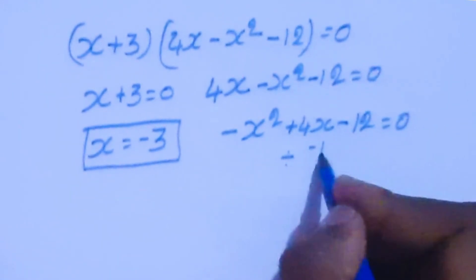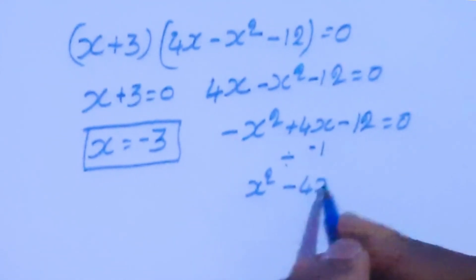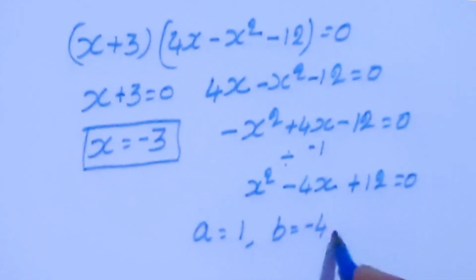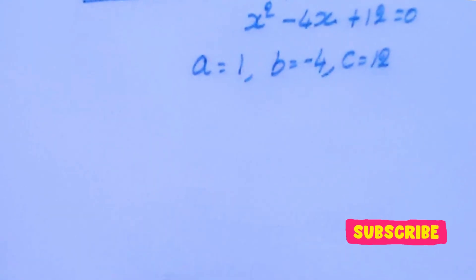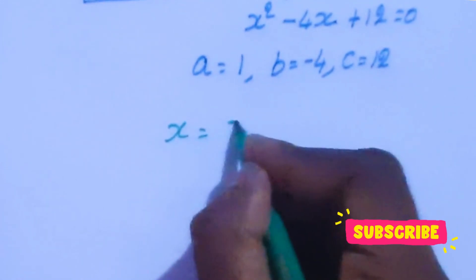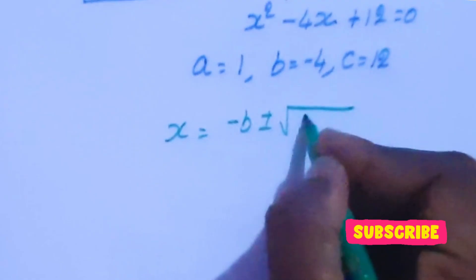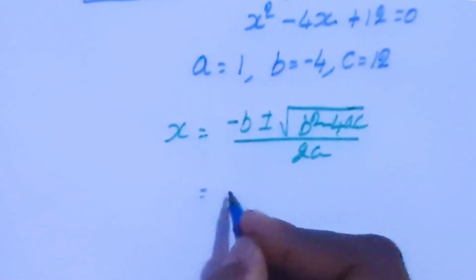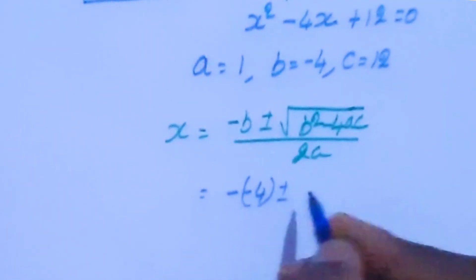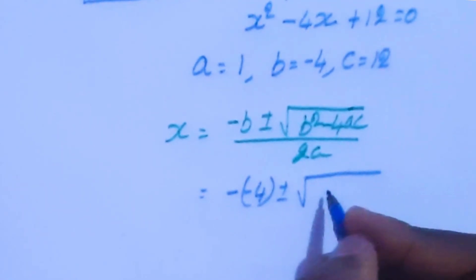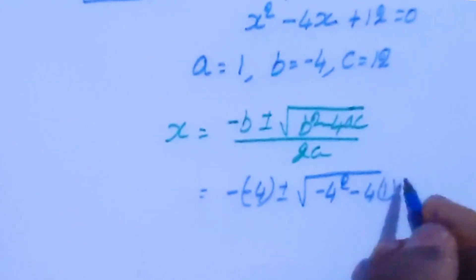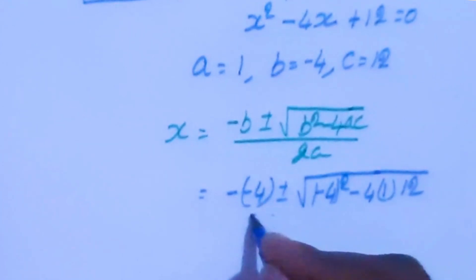Now divide by minus 1 here. So x squared minus 4x plus 12 equal to 0. Here we are going to apply the quadratic formula. Here a equal to 1, b equal to minus 4, c equal to 12. The quadratic formula is x equal to minus b plus or minus square root of b squared minus 4ac, all divided by 2a. Substituting: minus of minus 4 plus or minus square root of minus 4 squared minus 4 times 12 which is 48, divided by 2.